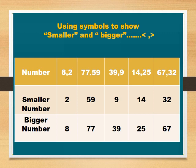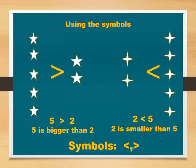Now, we see how to write smaller and bigger numbers using symbols. Here, we see this picture of stars. There are 5 stars and 2 stars. 5 is bigger than 2. So here we write 5 is bigger than 2.